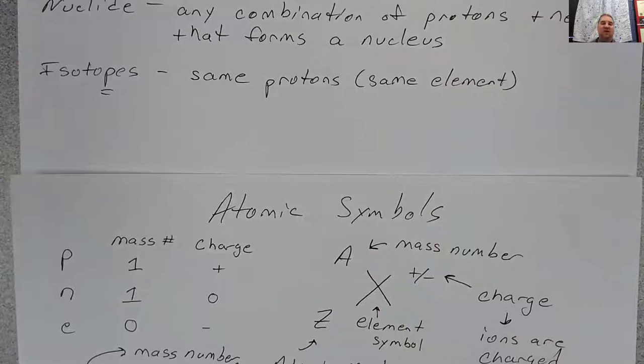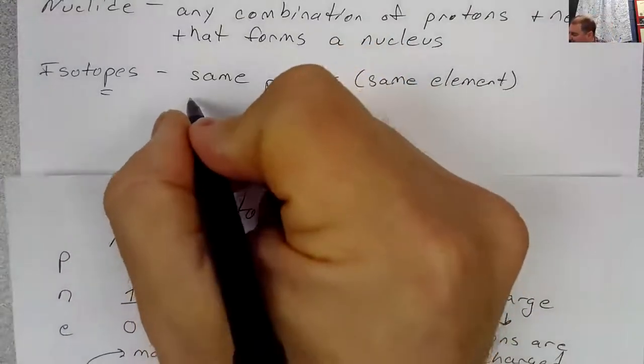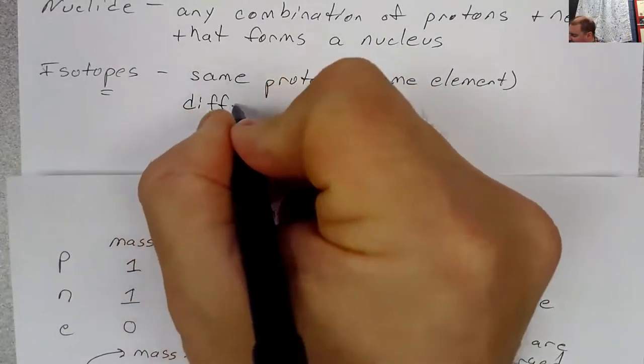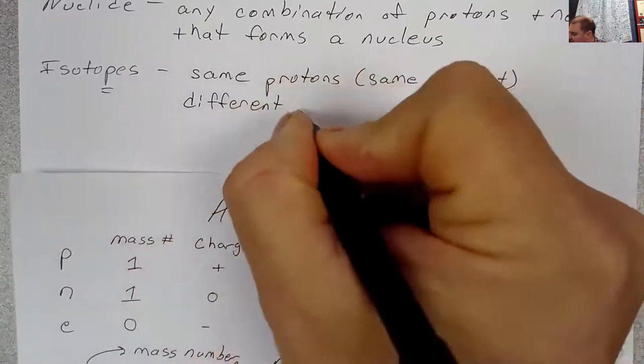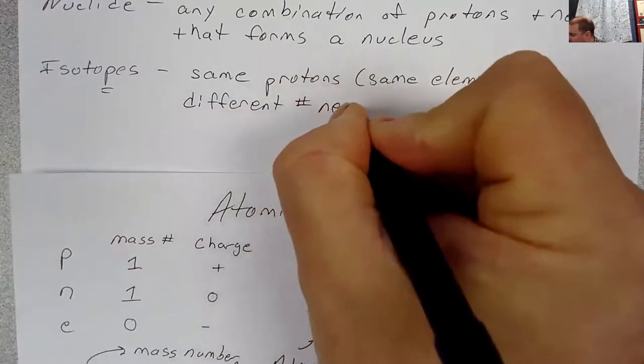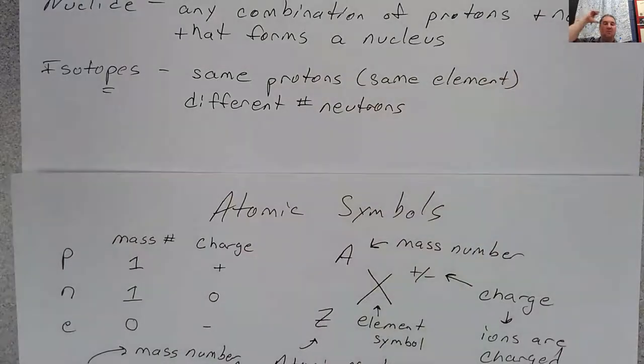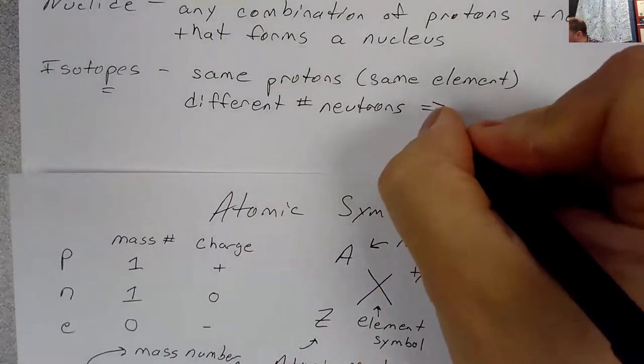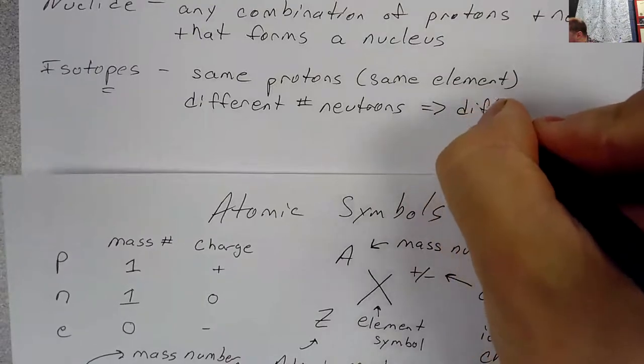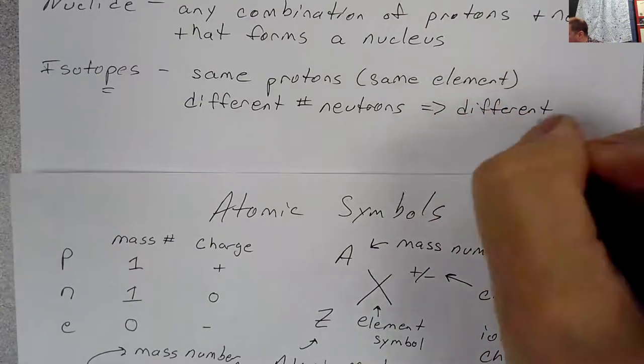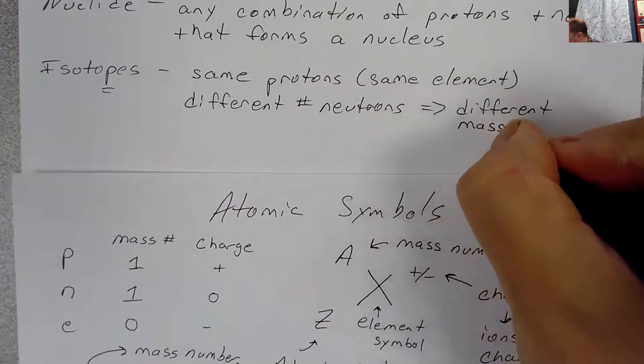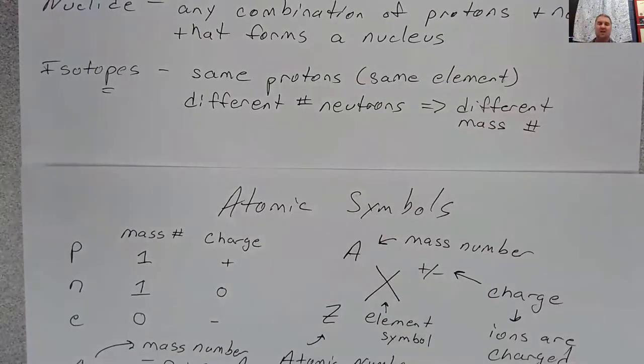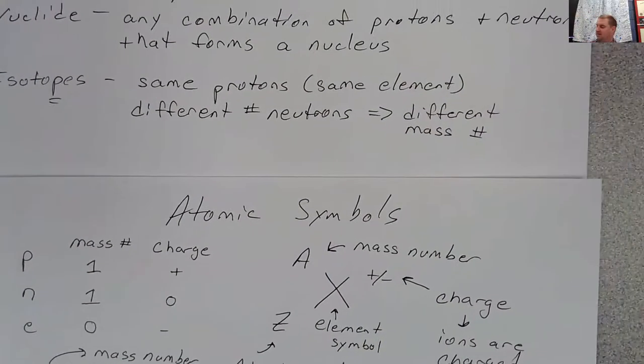But something here is going to be different. The difference is going to be the neutrons. And if you have the same number of protons, but you have different neutrons, then that means you're going to have different mass numbers.